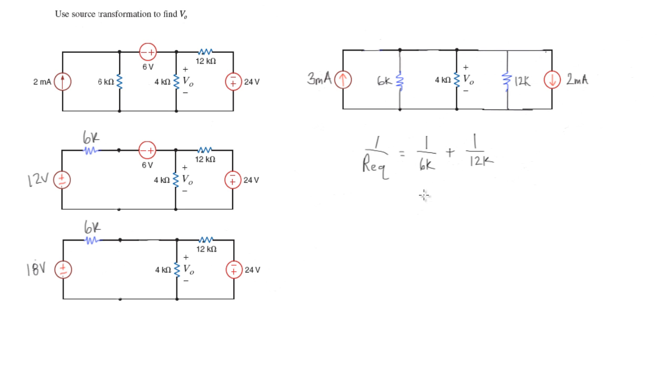And the LCD, the lowest common denominator, is going to be 12, so it's going to be 2 over 12K. We're just changing this to this here, okay, plus the 1 over 12K.